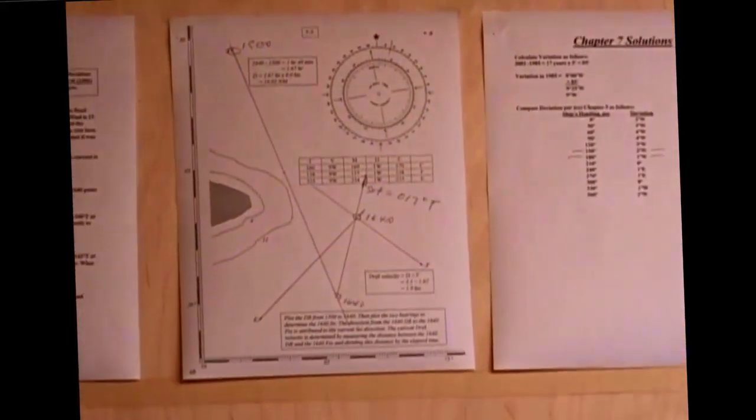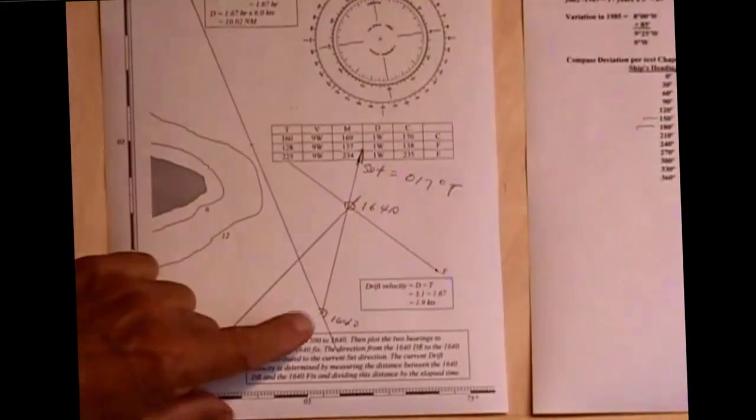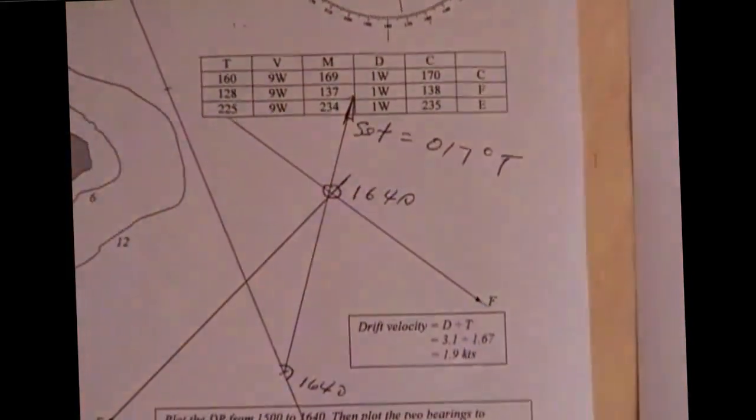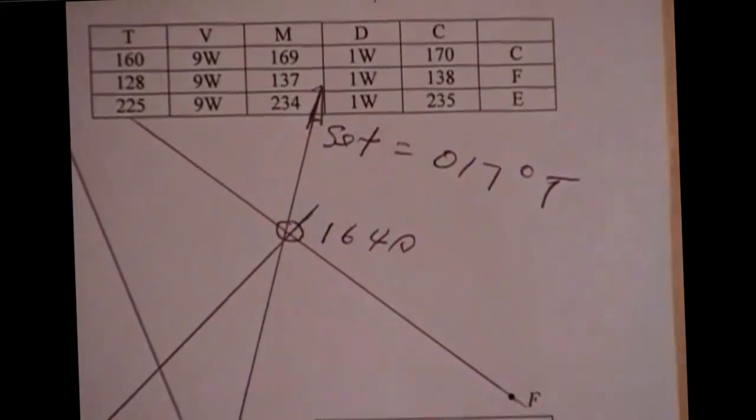So the current was flowing, based on this information, from the DR to the fix, flowing in that direction, 017 degrees true.